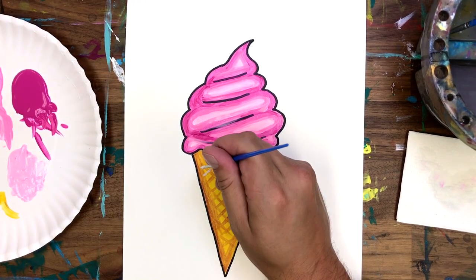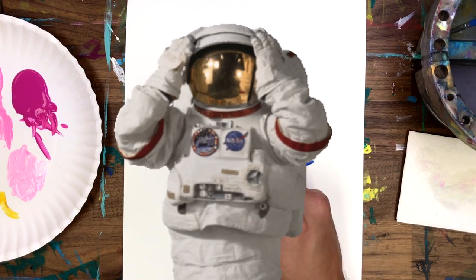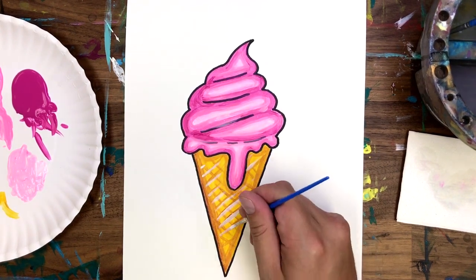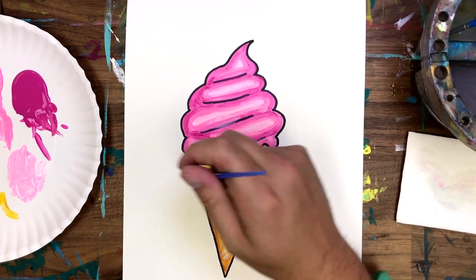According to NASA, ice cream is one of the three foods astronauts miss the most when they go on space missions. Can you guess the other two? Pizza and soda.